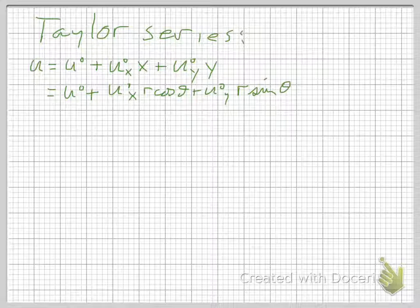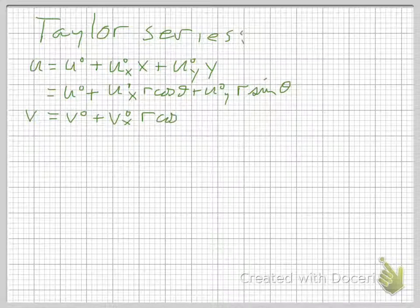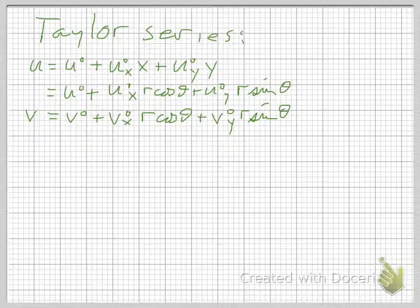Okay, and similarly, we would have a Taylor series expansion for v, which will look like this. v equals v naught, the value of v at the origin, plus a partial derivative, v naught x r cos theta, so that's dv naught by dx times x, plus dv naught by dy times y, or v naught y times r sin theta.